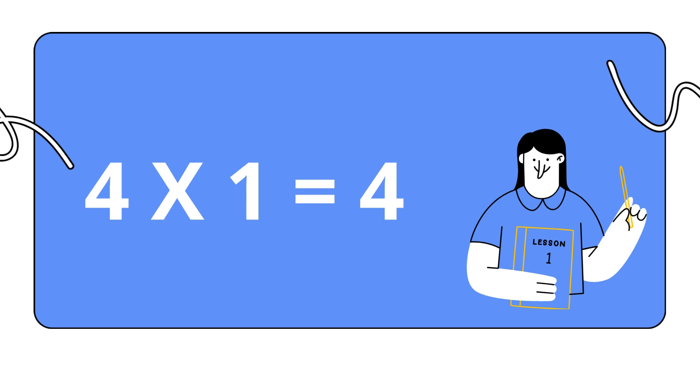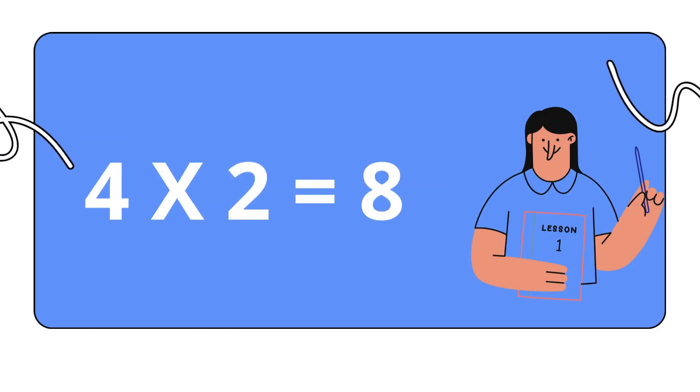Four ones are four. Four ones are four. Four twos are eight. Four twos are eight.